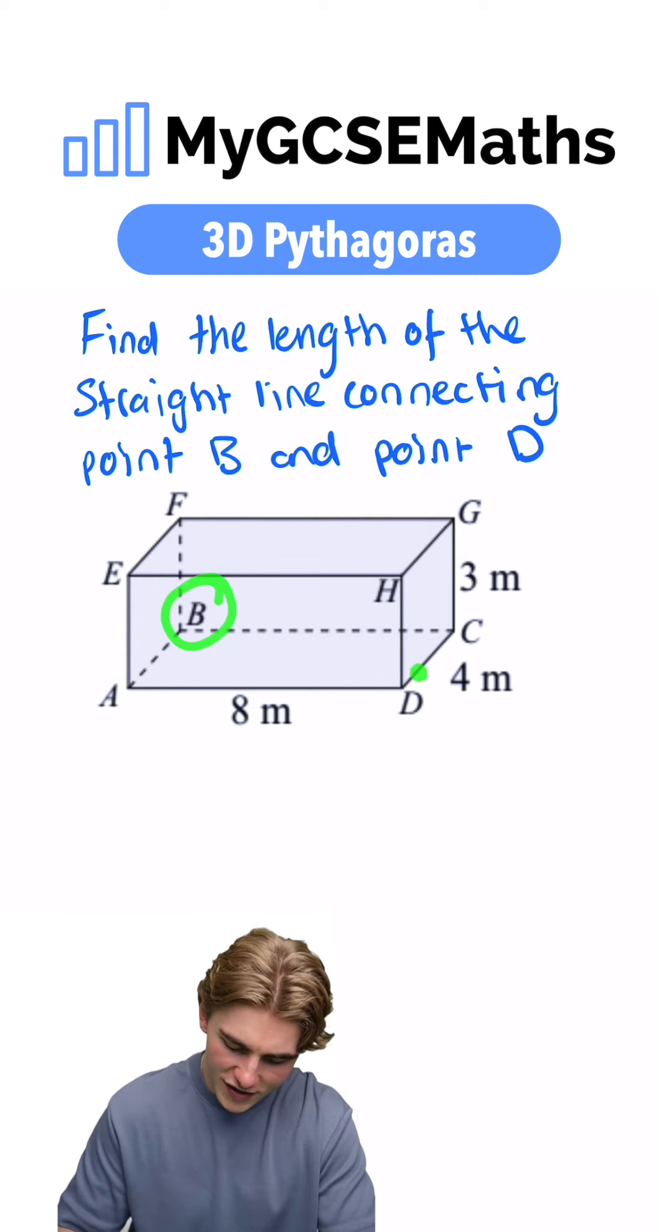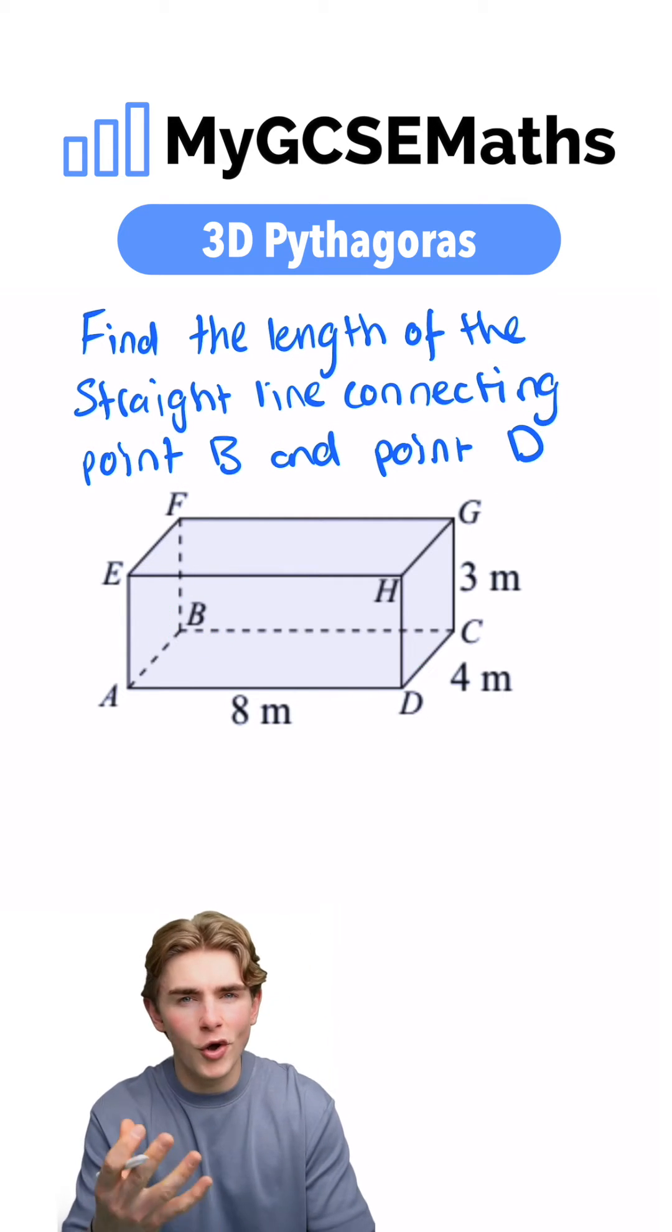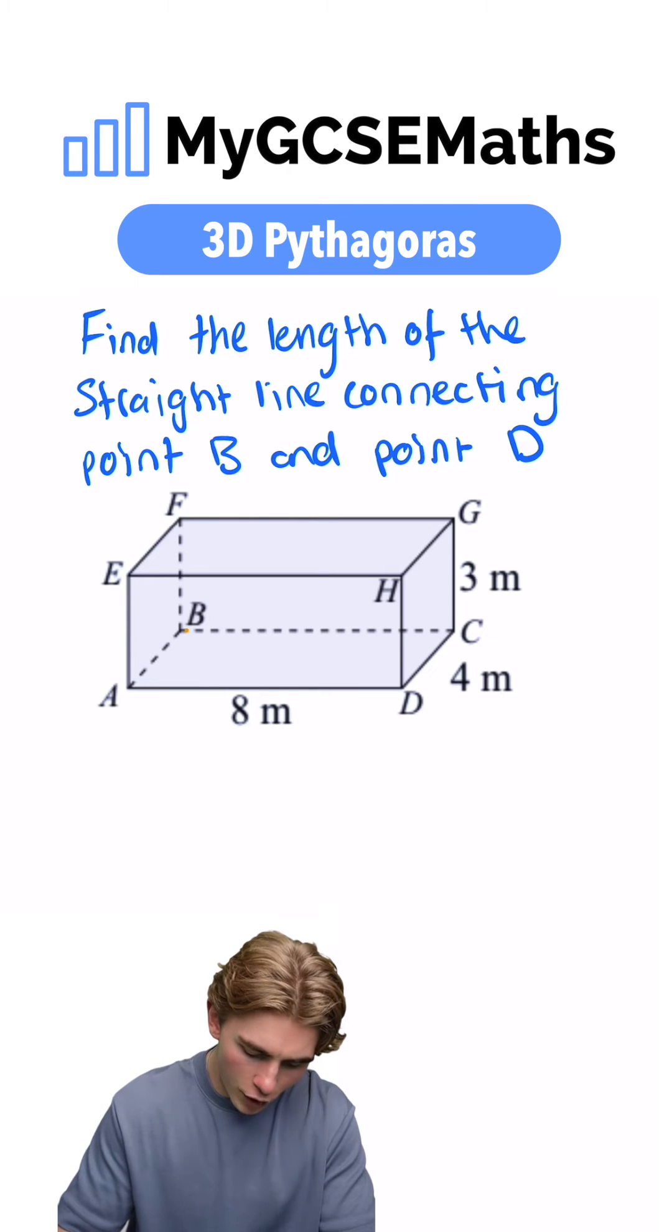Point B is over here and point D is down here. We can see that there's not currently a line connecting them, so we're going to draw one on.